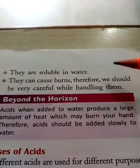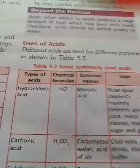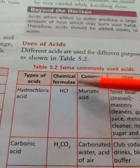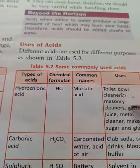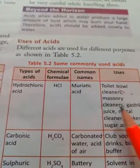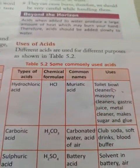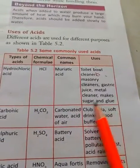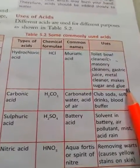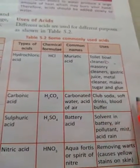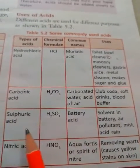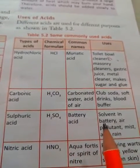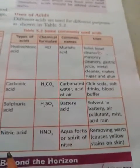Acids can also spoil materials, that is why they are stored in glass bottles. Uses of acids — types of acids with chemical formulas and common names: hydrochloric acid is used as a toilet cleaner and metal cleaner; carbonic acid is used in club soda or soft drinks; sulfuric acid is used in batteries; nitric acid is used to remove warts.